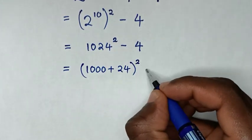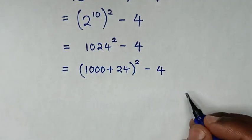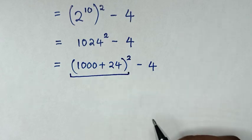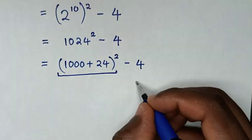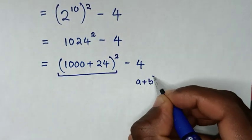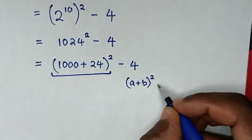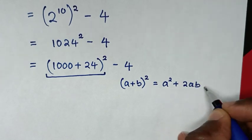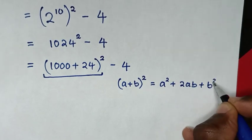Then from here, (1000 + 24)^2 is in the form of (a + b)^2, which is equal to a^2 + 2ab + b^2.